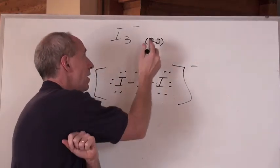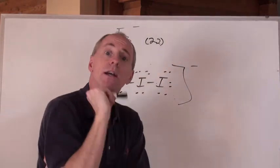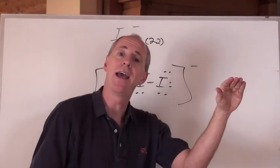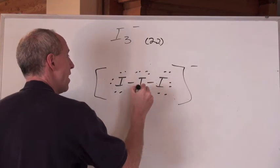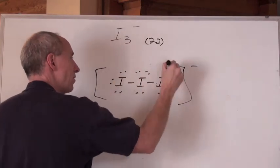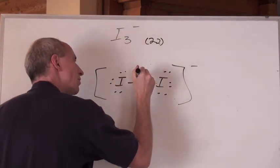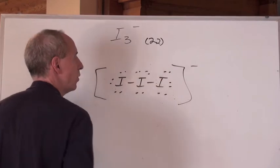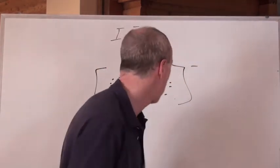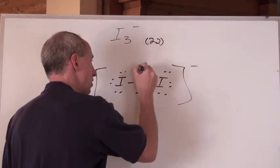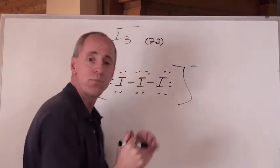Now, can iodine exceed the octet rule? Yes, because it's not in n equals 2, or period 2 of the periodic table. 2, 4, 6, 8, 10. The other ones are octets and are happy. So we put the center one as the only one that has to exceed the octet rule. Instead of two of them, we only have one exceeding the octet rule. We don't put in multiple bonds, just extra lone pairs. And now, that's beautiful.